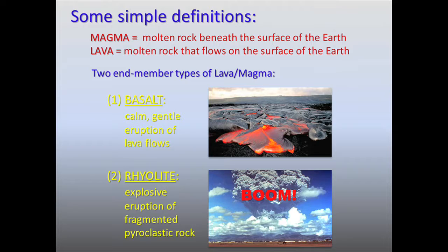When we think of eruptions, there's a great spectrum of different types. Some eruptions are very calm and gentle. Other eruptions are highly explosive. The driving force for that is really the chemistry of the magma itself. To simplify this, I want to look at magma or lava in two compositional types. One type would be a basalt-type lava. If you go to Hawaii, there are ongoing eruptions on the Big Island today, and what you'll see is a very calm outpouring of basalt lava flows.